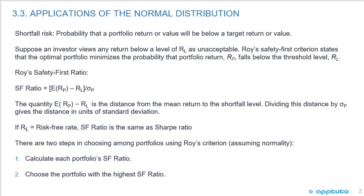Shortfall risk is the probability that a portfolio return or value will be below a target return or value. Suppose an investor views any return below a level of RL as unacceptable. Roy's safety first criterion states that the optimal portfolio minimizes the probability that the portfolio return, RP, falls below the threshold level of RL. So Roy's safety first ratio is the expected return of the portfolio minus RL, which is the minimum return acceptable, divided by the standard deviation of the portfolio.